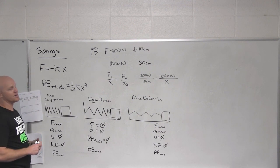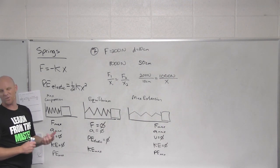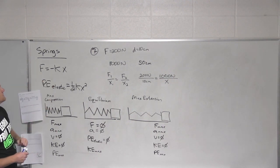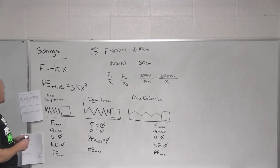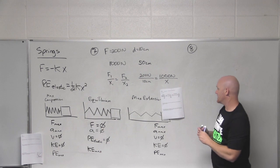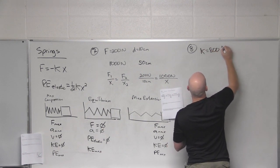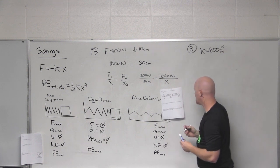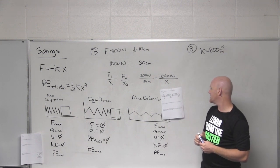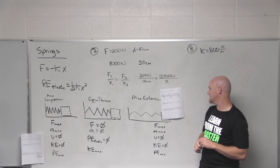By the way, if you were going to calculate the K value, you'd probably convert the displacement to 0.1 meters, since spring constants are often given in newtons per meter. Number eight: a spring with a spring constant of 800 newtons per meter and a two kilogram mass on the end is stretched horizontally 20 centimeters from its equilibrium position on a frictionless surface and released.